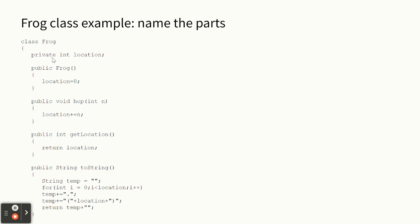What do we call this - 'private int location'? An instance variable. A variable. The AP Classroom calls it a data member - whatever, it's a variable. What do I call this? I heard someone say it - a constructor. Constructors don't have a return type, they say public, and they have the exact same name as the class. What do I call this? It's a method.